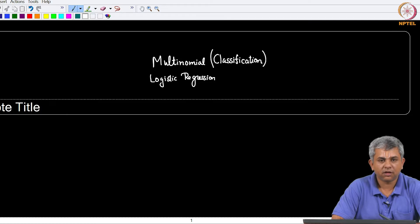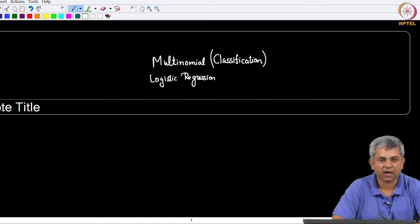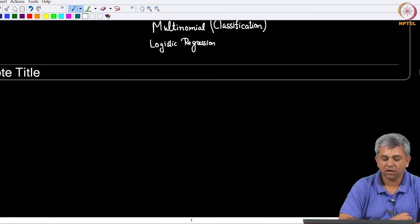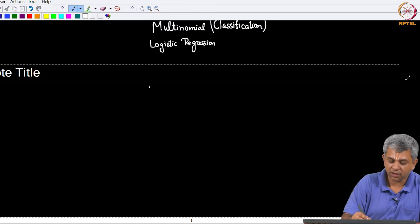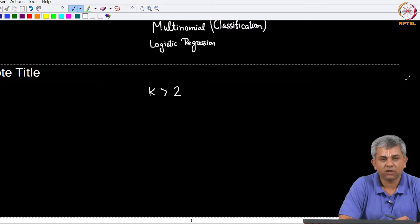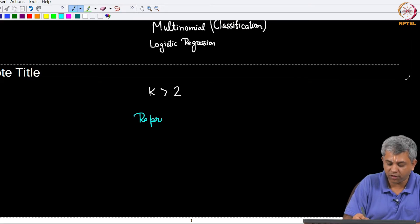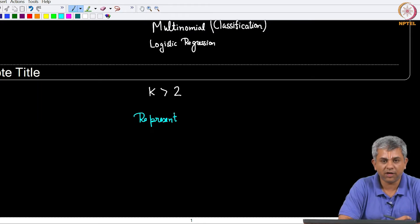Welcome back. We will now look at some further details of the multinomial logistic regression, or the multinomial classification algorithm. Remember that multinomial logistic regression deals with when you have K greater than two classes. In the last video we saw that in order to establish our deep learning model, there are four different things we need to do.